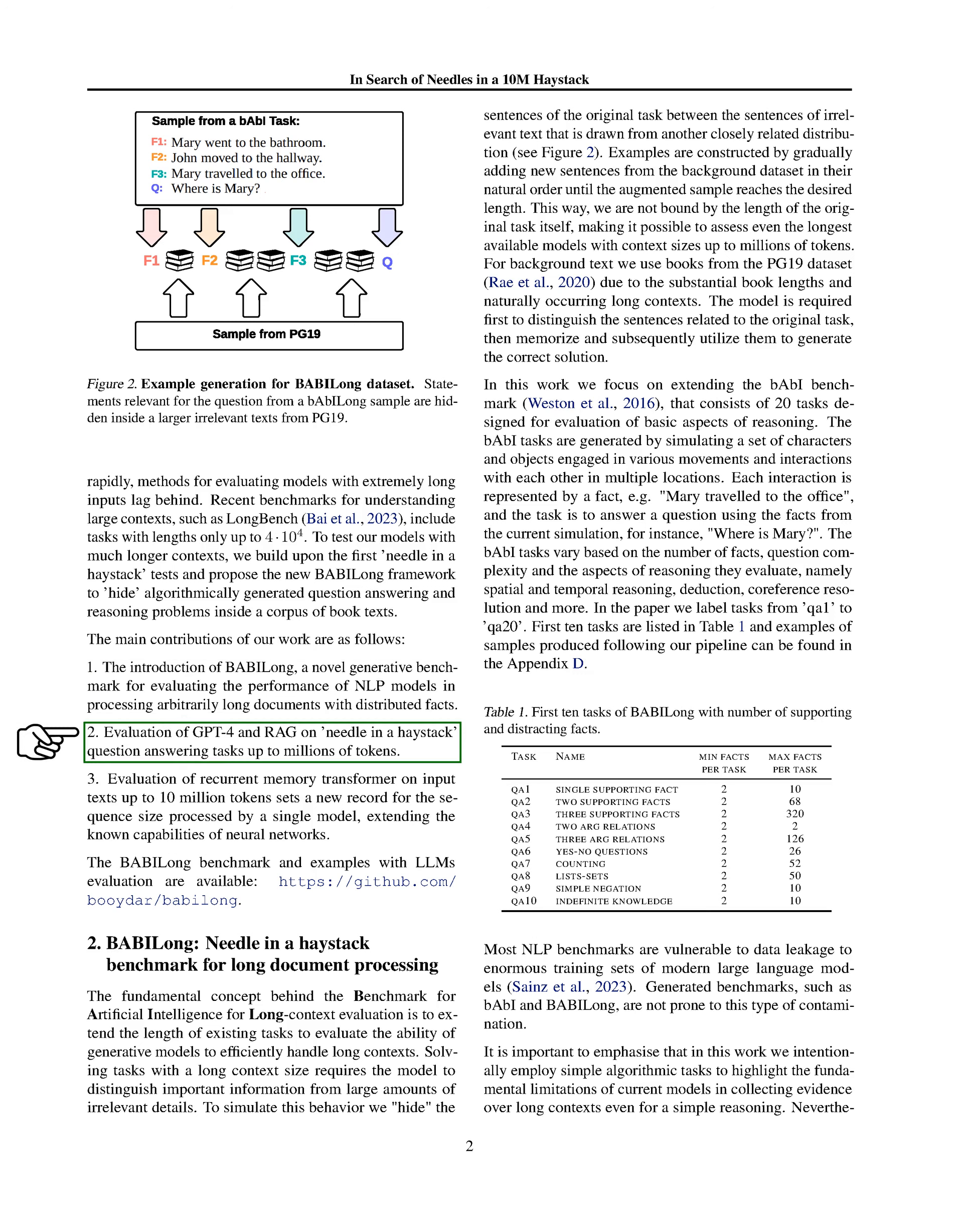We evaluate the performance of GPT-4 and RAG on needle-in-a-haystack question-answering tasks involving up to millions of tokens. Additionally, we set a new record by evaluating a recurrent memory transformer on input texts of up to 10 million tokens, pushing the boundaries of what neural networks can process.